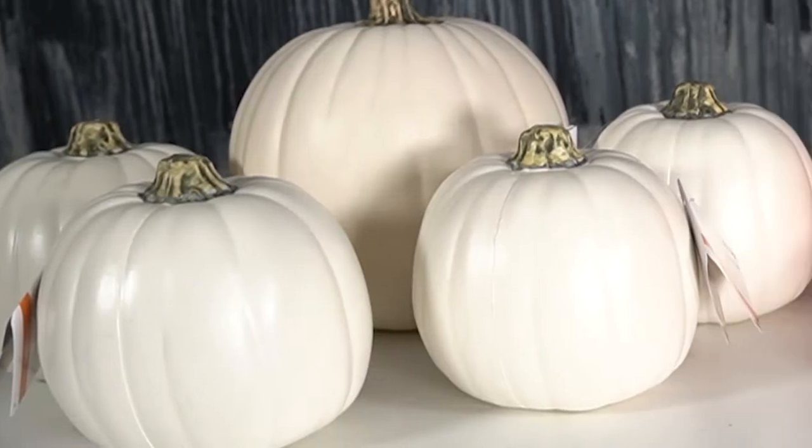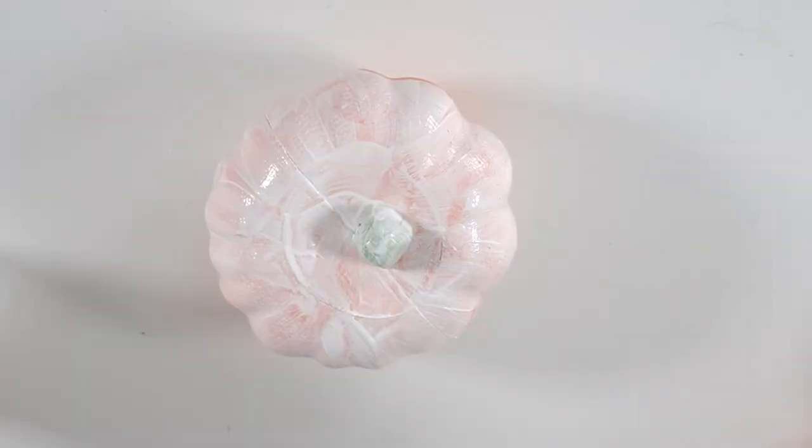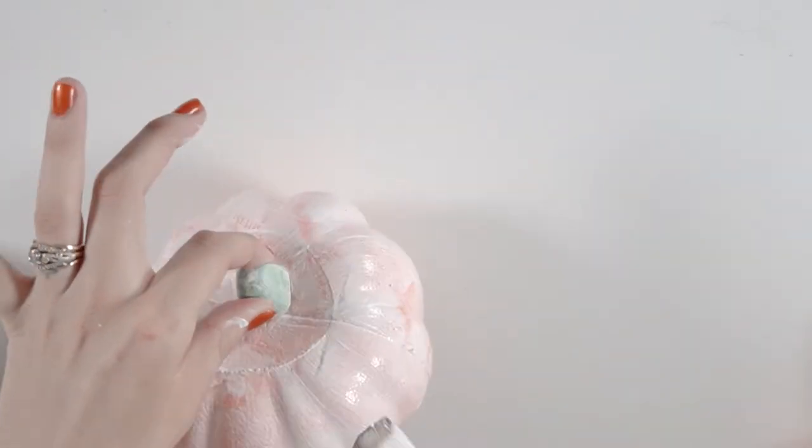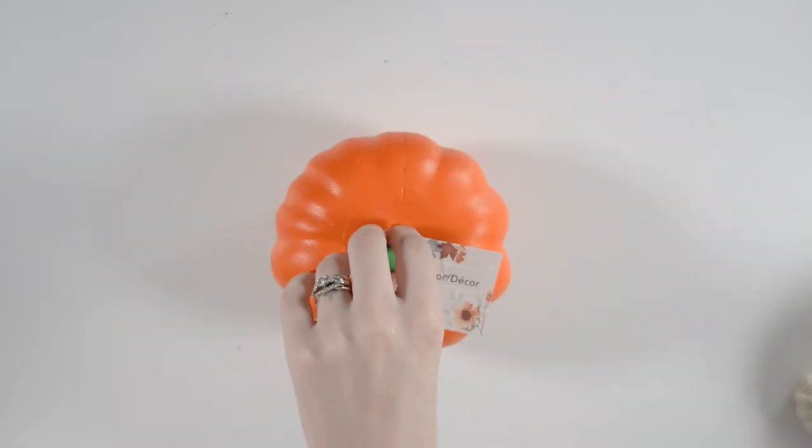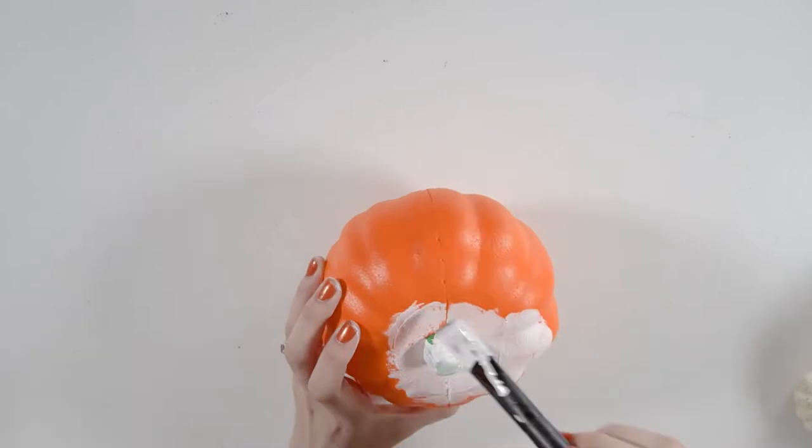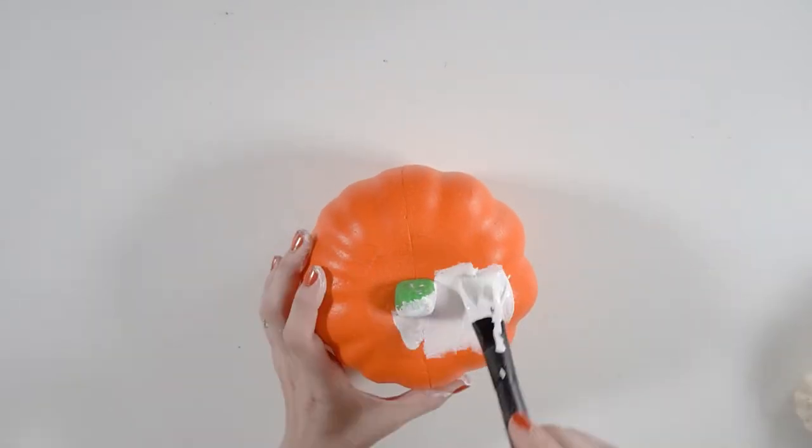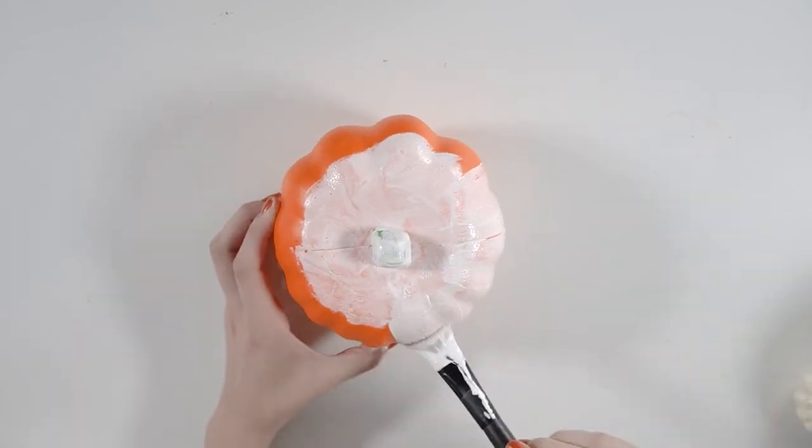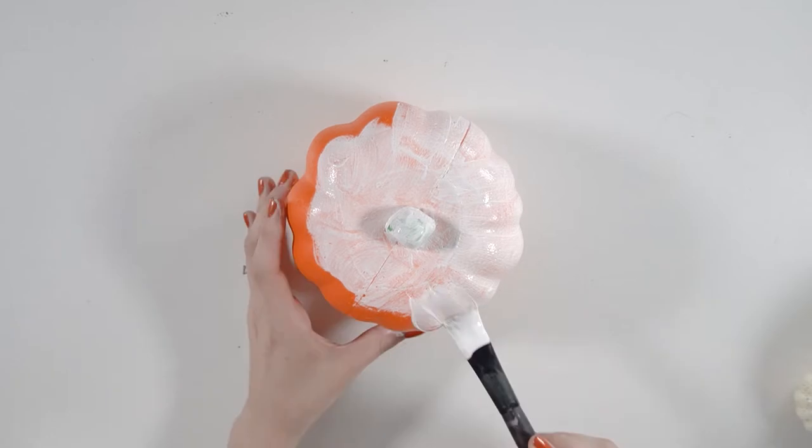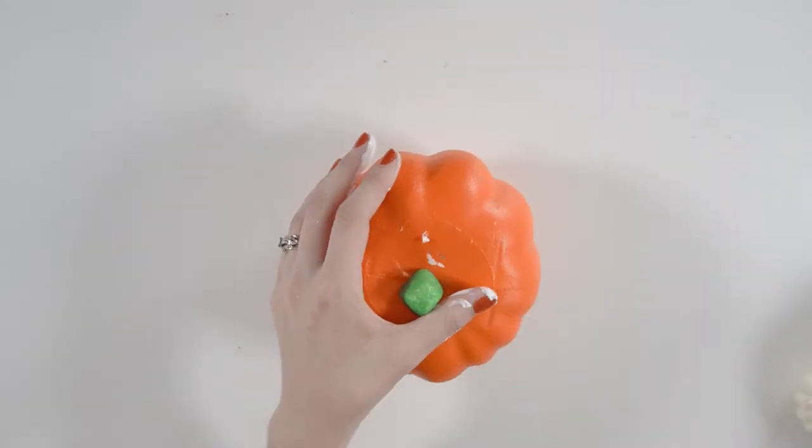Then I began the lovely task of priming all of these pumpkins. All of these pumpkins. During this time of gessoing, I realized I have a lot of pumpkins here. So many pumpkins. It just kept going and the gessoing was never-ending and it was taking a long time. And I started to think, okay, I might have to change up my plan of how I want to paint these pumpkins if I want to finish some time this year.